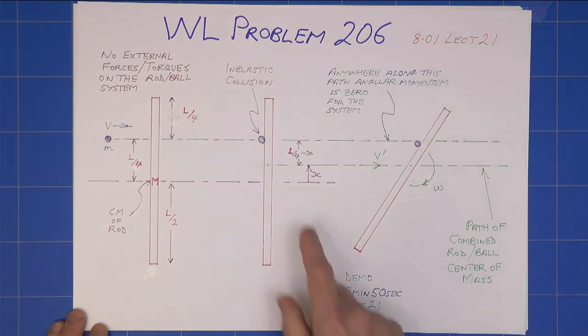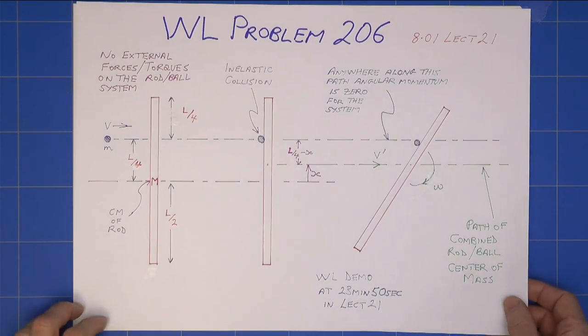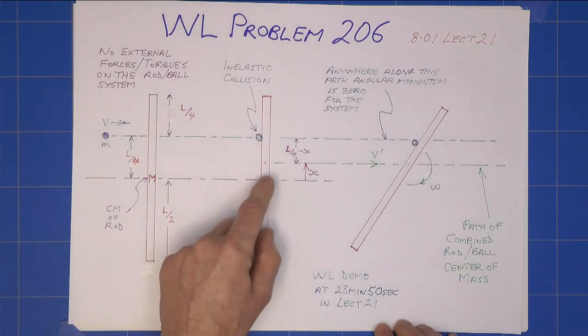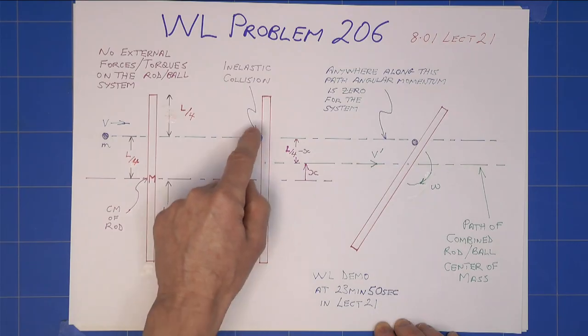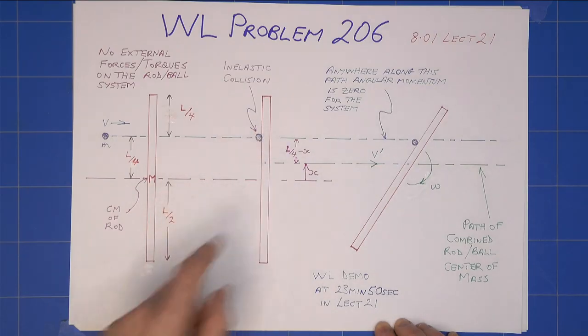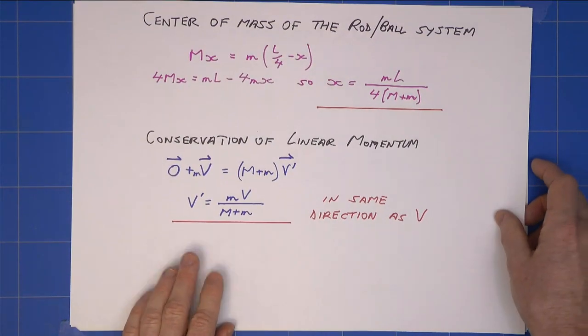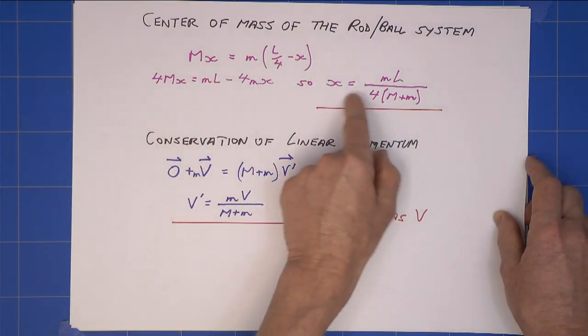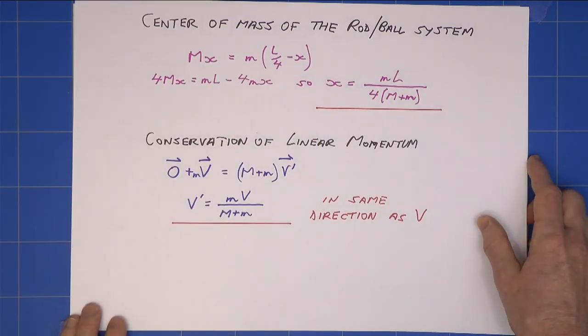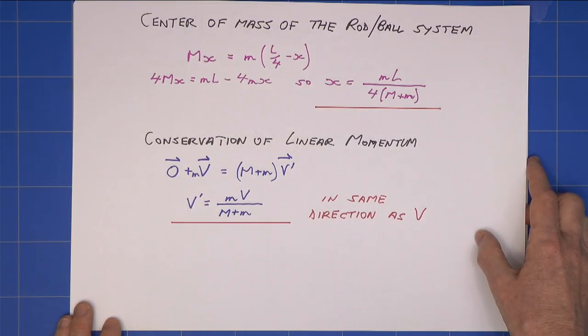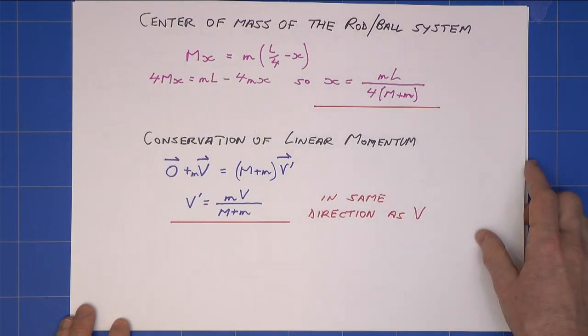So first of all, we're going to find what x is, where the centre of mass is. It's simply going to be mass of the rod, big M, times x equals little m times L over 4 minus x, which I do here. Simplifying, I get x equals that. So that is now where the centre of mass of the rod ball system is.